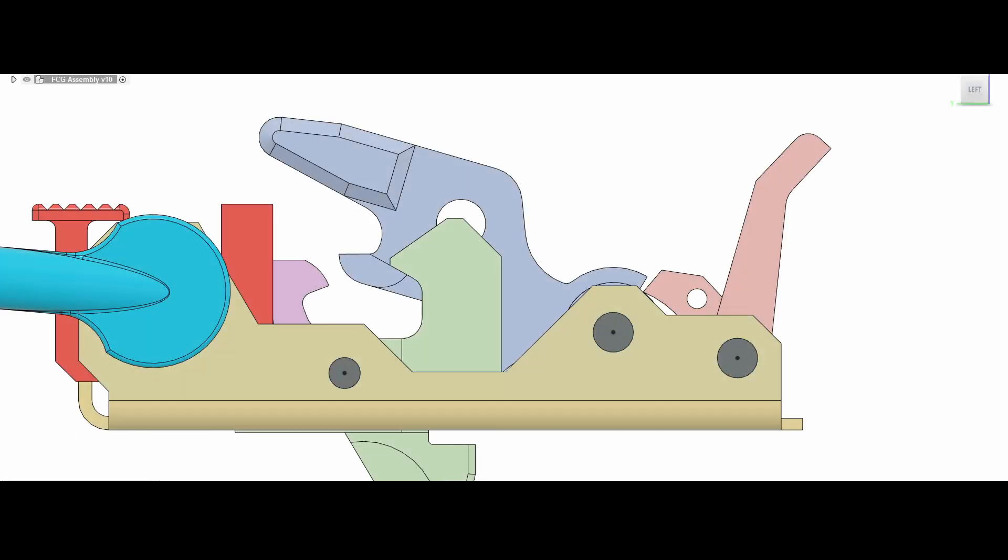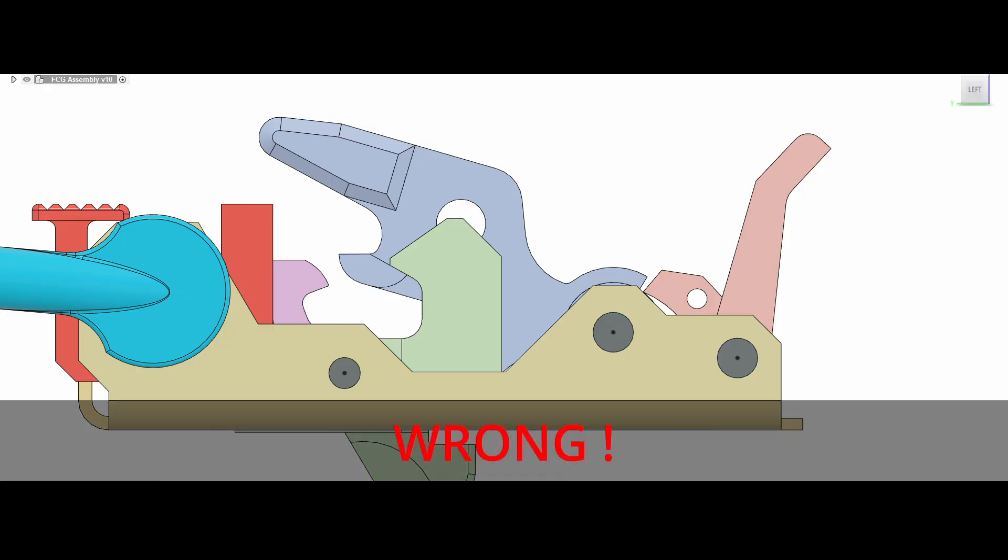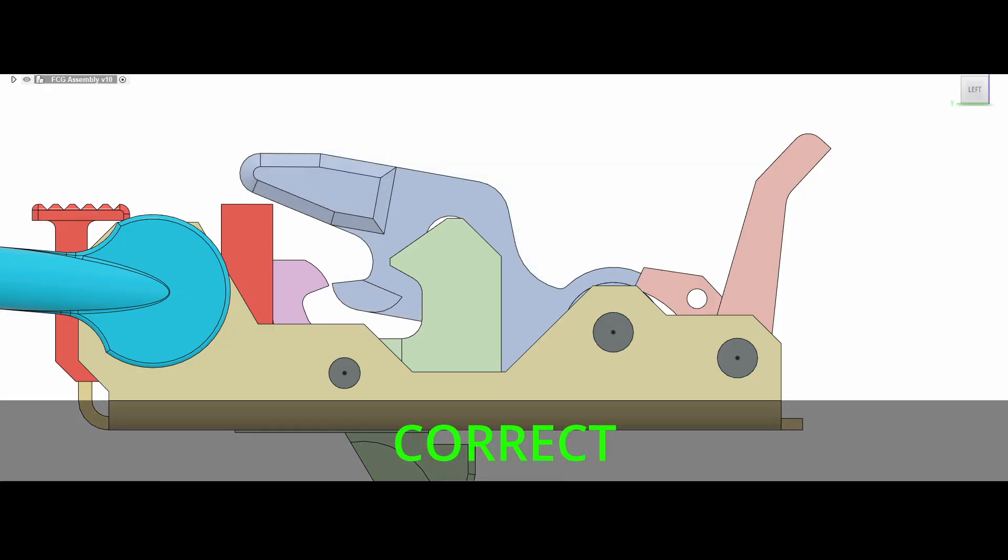And since the trigger hook does not touch the hammer's stud here, it also shouldn't touch the hammer's stud here. And in this diagram, the hammer is being held back by the auto sear, not the trigger. So the model that I made last video is wrong. The correct way to model the QBZ-191 trigger pack is that the auto sear must engage the hammer before the trigger. So as you can see here, the auto sear is touching the hammer, while the trigger hook is hovering above the hammer's stud.